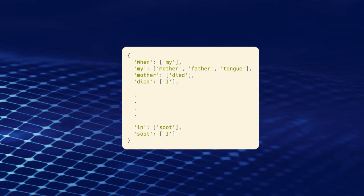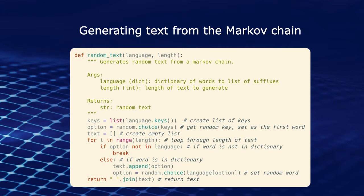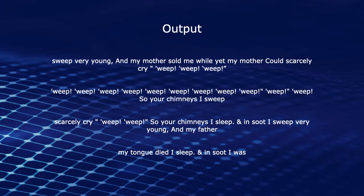Once we run the function, we get an output like: 'when' succeeded by 'my,' 'my' succeeded by 'mother,' 'father,' 'tongue,' and so on. Then we generate random text from this Markov chain by passing the chain as the language and the desired output length. We create the list of keys, choose a random starting word, create an empty text list, and iterate until the word is not present in the dictionary — at which point we break out of the loop. Otherwise, we push the random word into the output, assign another random word, and finally return the joined string.